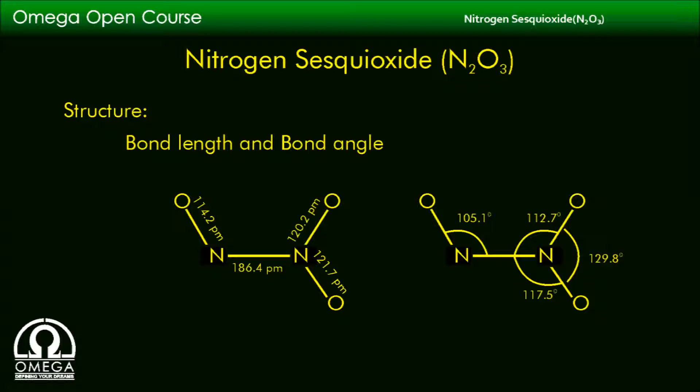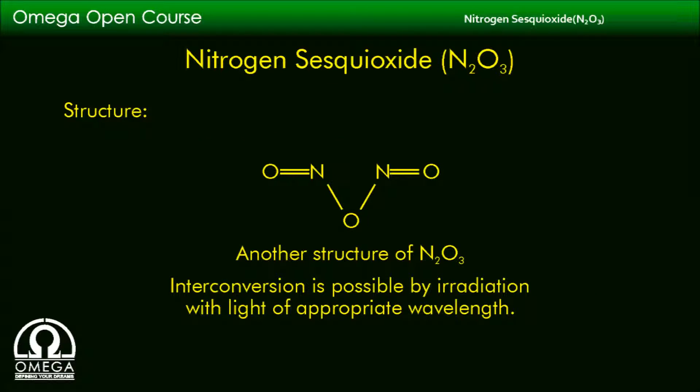Similarly, the three N-N-O bond angles are different. They are 105.1 degrees, 112.7 degrees, and 117.5 degrees. The O-N-O bond angle is 129.8 degrees.